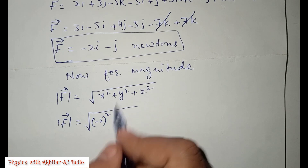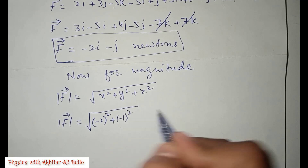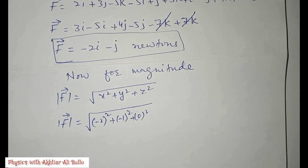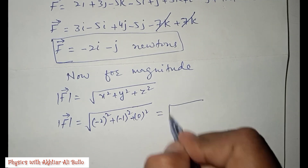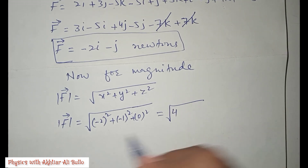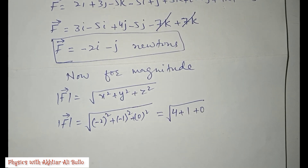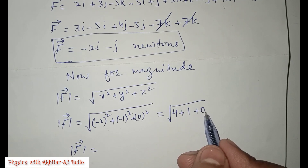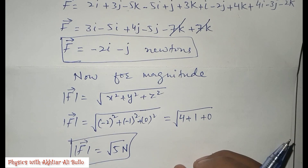The value of y is −1, so y² is (−1)². The value of z is absent, meaning z = 0. The square of −2 is +4, the square of −1 is +1, and the square of 0 is 0. So the magnitude of force is √(4 + 1 + 0) = √5 Newtons.